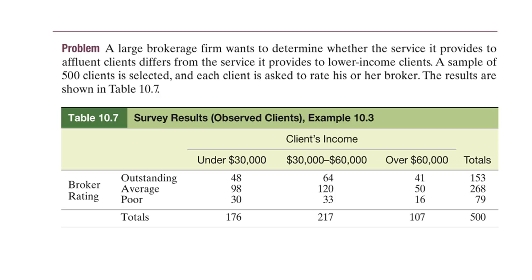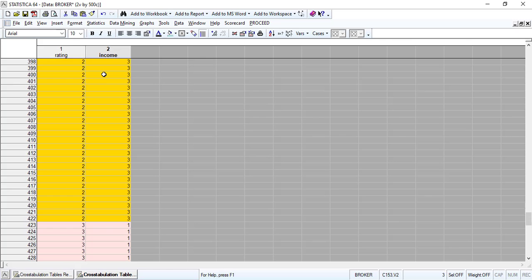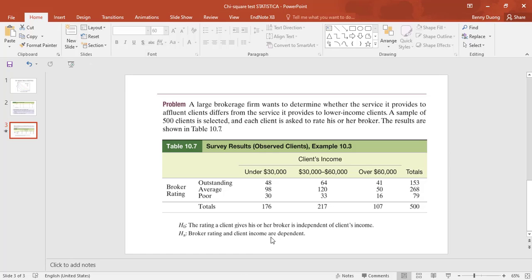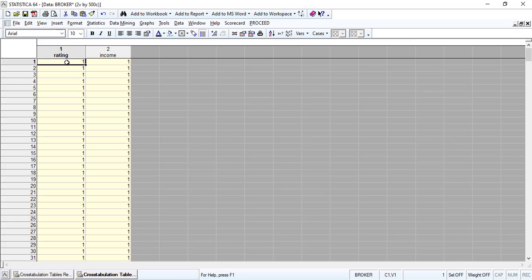When we run the analysis we have to convert this table into raw data. I will show you how to code this in STATISTICA. The raw data comes from this table. For example, we have outstanding rating and income under $30,000 — row one column one — which is 48 cases. Rating is the row variable and income is the column variable.